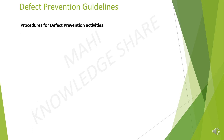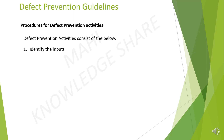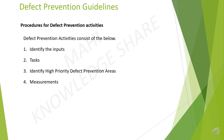Procedure for defect prevention activities: defect prevention activities consist of 5 steps. Step 1: Identify the input. Step 2: Task. Step 3: Identify high priority defect prevention areas. Step 4: Measurements. Step 5: Output. We will explain all these 5 steps in the following slides.